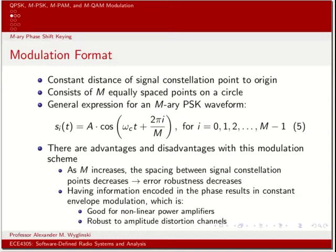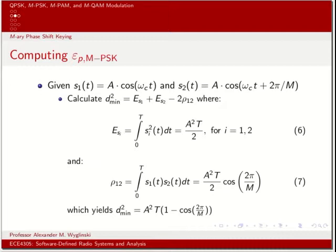On the other hand, if a channel corrupts only amplitude, phase modulation is a good choice since information resides entirely in the phase. It's a trade-off: robustness decreases as points crowd together, but phase modulation is resilient to amplitude distortion. For the power efficiency of MPSK, we'll derive generic expressions valid for any M, computing minimum Euclidean distance using the closest adjacent constellation points.